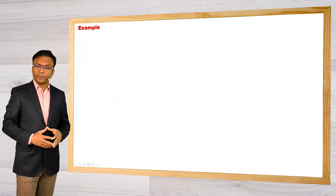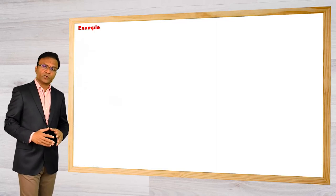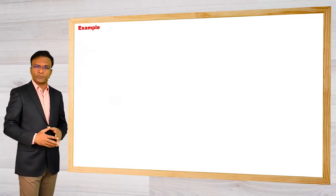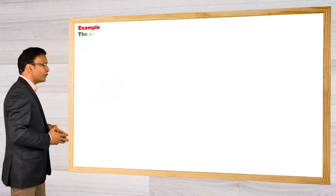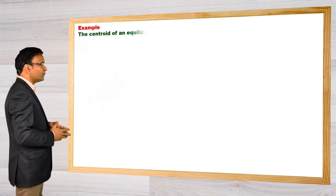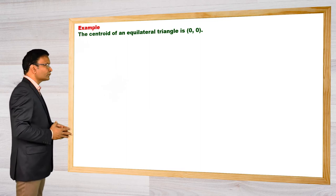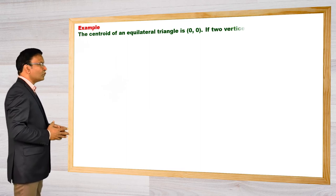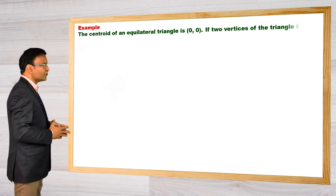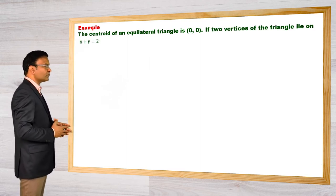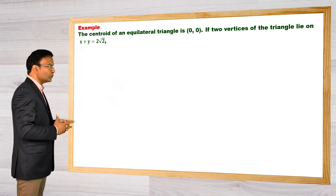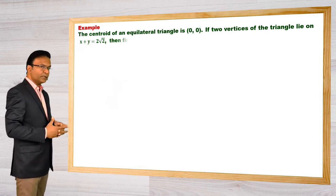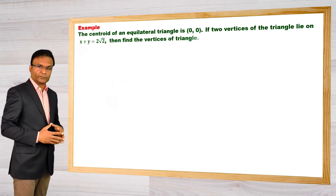Let us try one complex geometrical application of this form of straight line. Consider this example: the centroid of an equilateral triangle is (0, 0). If two vertices of the triangle lie on x + y = 2√2, then find the vertices of the triangle.